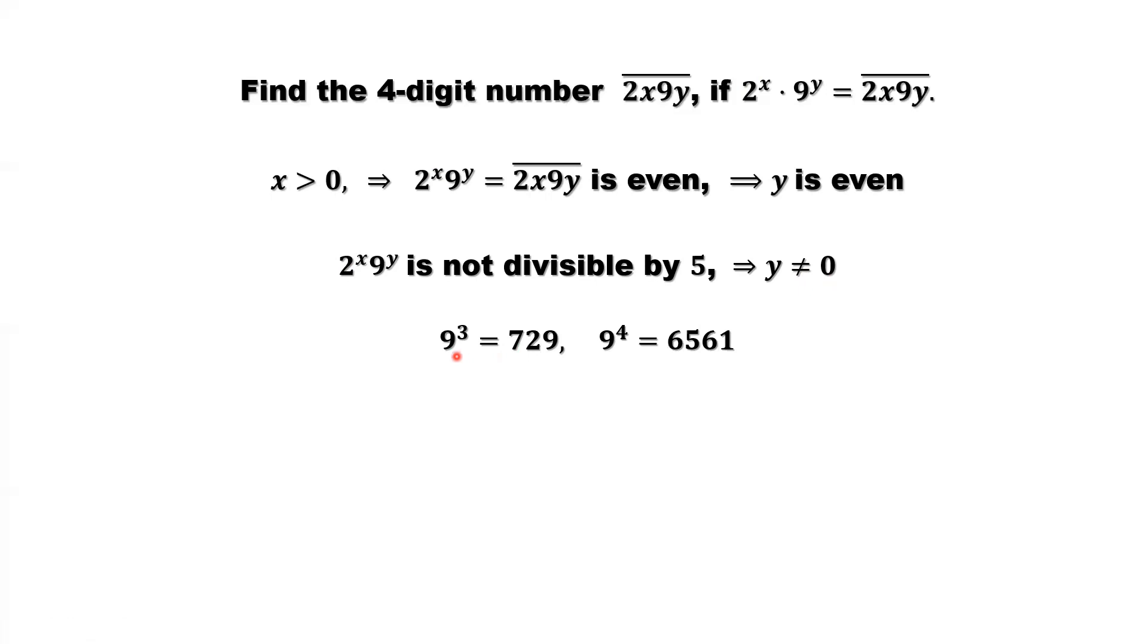Since 9 to the power 3 equals 729, a 3 digit number, and 9 to the power 4 is a 4 digit number bigger than 2x9y, from here, we have y must be less than or equal to 3.